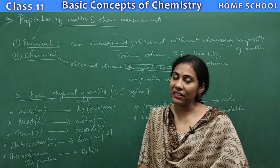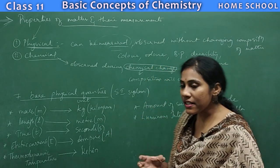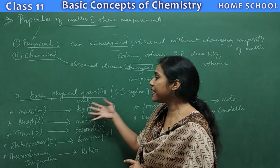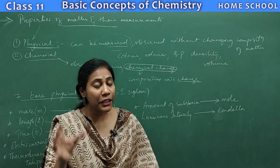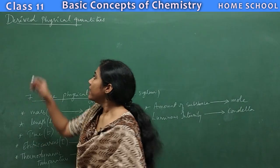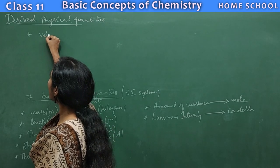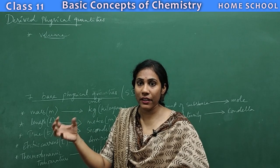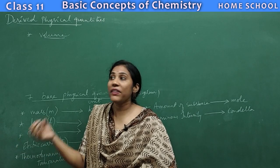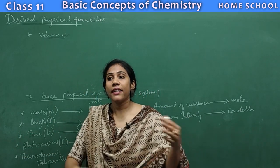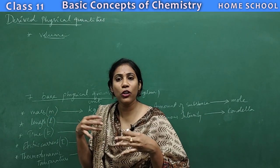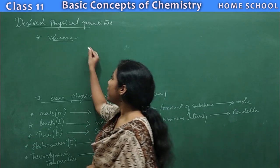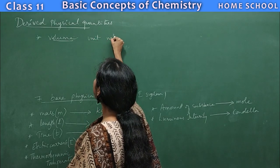Along with the base physical quantities, there are derived physical quantities like density, volume, and temperature, which are derived from the base quantities. The most important derived physical quantity is volume, which is very important in chemistry because most gases combine and that combination is expressed with the help of volume — for example, this much cm³ of gas combined with that much cm³ of gas.